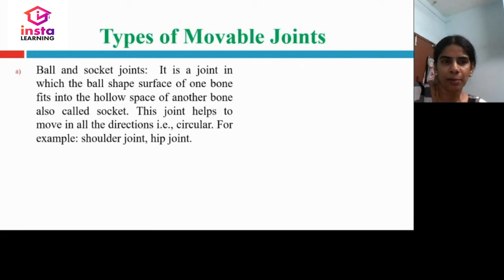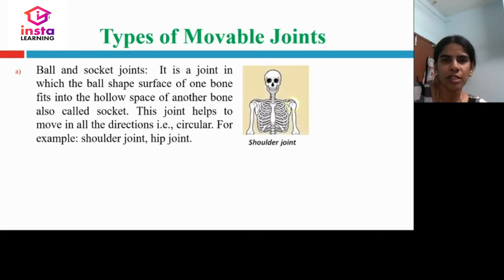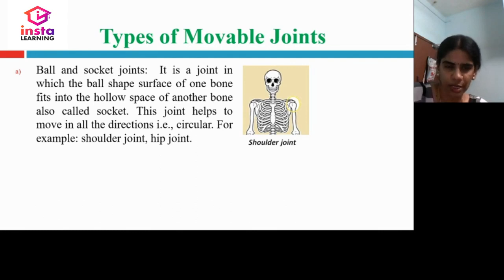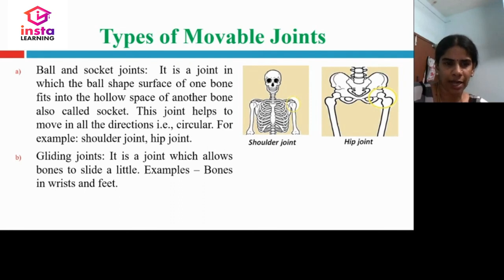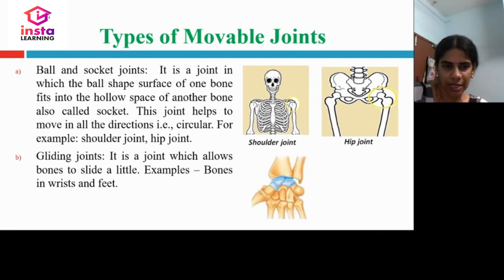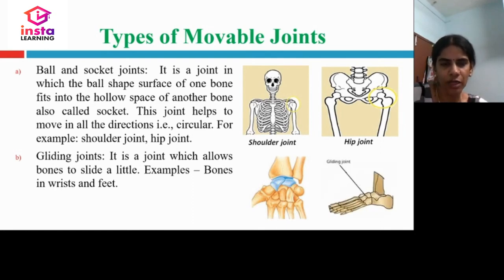The third type of joint is a ball and socket joint, where a ball-shaped surface of one bone fits into the hollow space (socket) of another bone. This joint helps movement in all directions, that is, in circular motion. Examples are the shoulder joint and hip joint. The fourth movable joint is a gliding joint, which allows bones to slide a little, and can be seen in the wrist and foot.